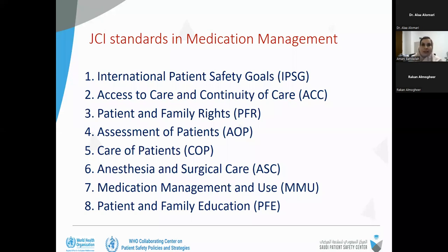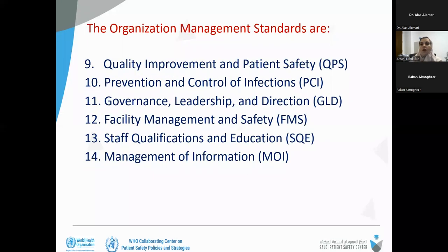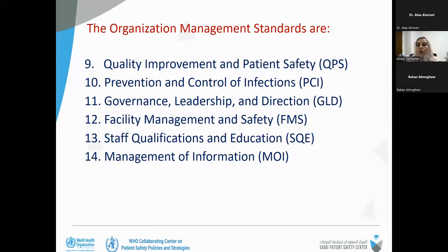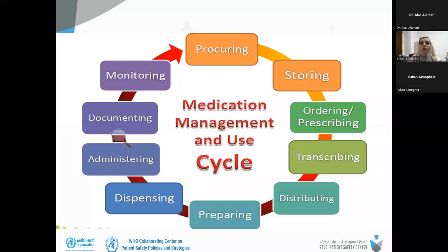These chapters include their own policies, guidelines, and internal and external standards. They cover assessment of patients, care of patients, anesthesia and surgical care, medication management and use, and patient and family education. The organization management standards include another six points: quality improvement and patient safety, prevention and control of infection, governance leadership and direction, facility management and safety, staff qualification and education, and management of information. These are the goals we follow in quality to ensure proper patient care.